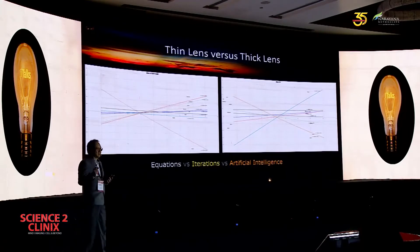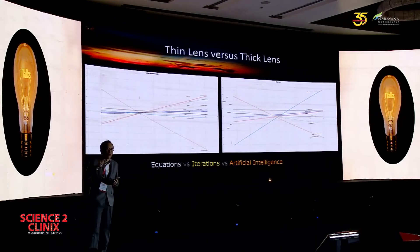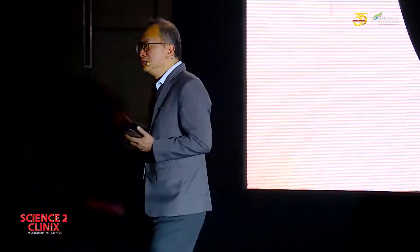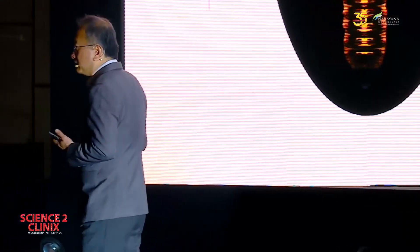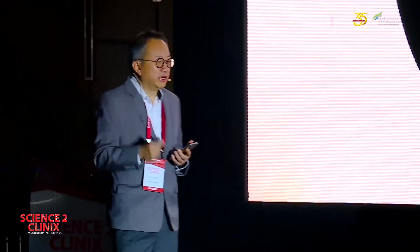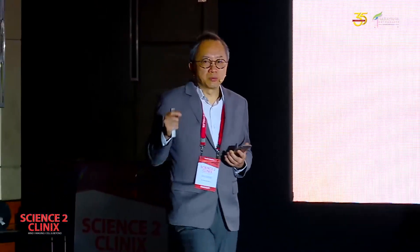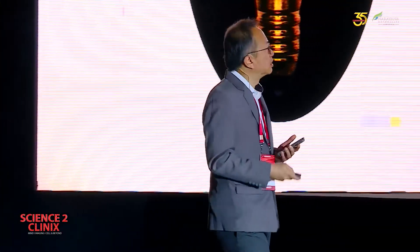Roughly, we can divide the world into three approaches. The Europeans still prefer to use equations, but the equation has gotten very complex. The Americans prefer to use artificial intelligence — that's Warren Hill's approach — while in Asia, Australia, and Singapore, where we developed EVO, we use iterations.